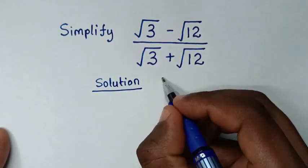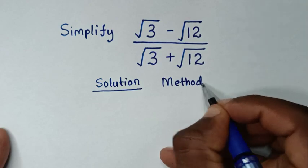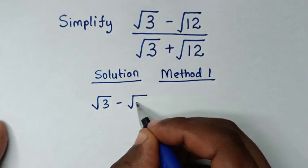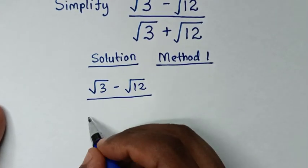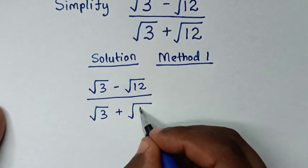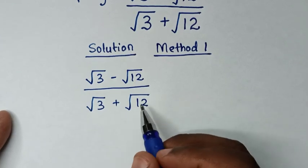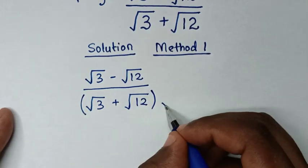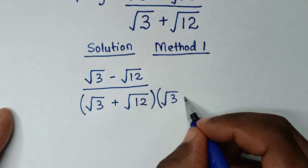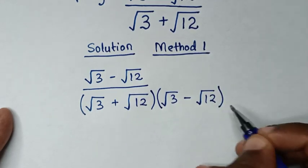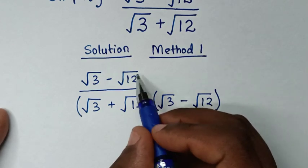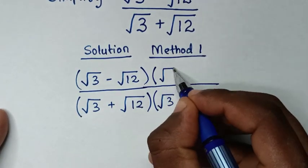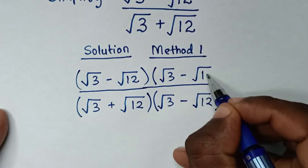Solution of the first method, or Method 1. Our problem is square root of 3 minus square root of 12, over square root of 3 plus square root of 12. In the first step we start by rationalizing the denominator. We multiply the denominator by square root of 3 minus square root of 12, and also multiply the numerator by the same expression.